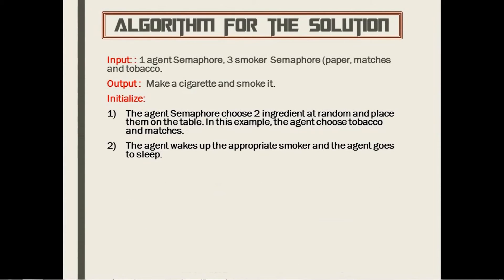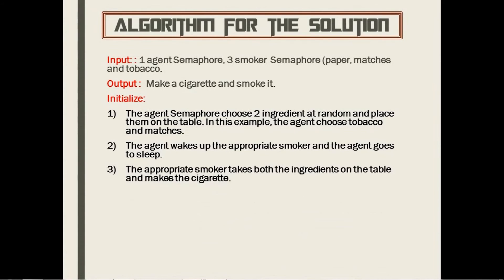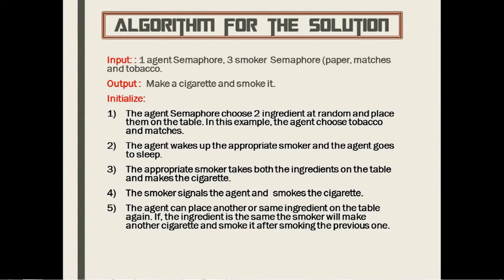In this example we use tobacco and matches. The agent analyzes the two ingredients and wakes up the appropriate smoker, then goes to sleep. The appropriate smoker takes both ingredients from the table and makes the cigarette, then signals the agent and smokes the cigarette. The agent can then place another or the same ingredients on the table again; if the same, the smoker will make another cigarette and smoke it after the previous one.